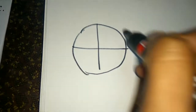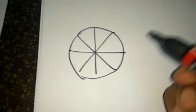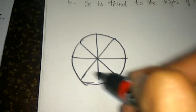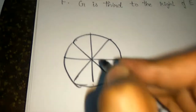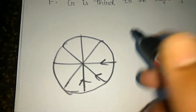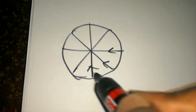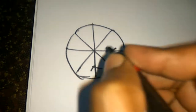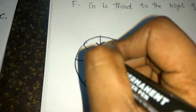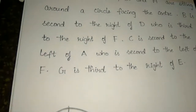When members are facing the center, identify the left side and right side carefully. Center facing means you look toward the center — your left side and right side are determined from that perspective. Keep this in mind as we place members using the given clues.